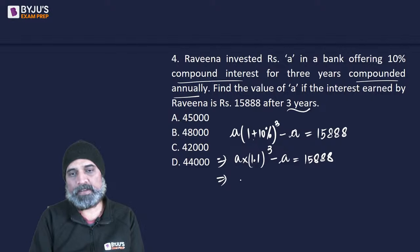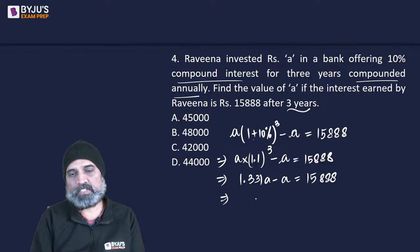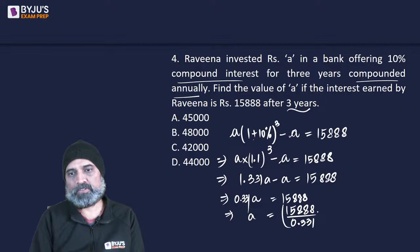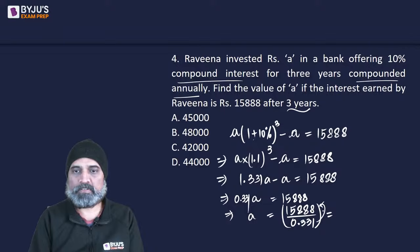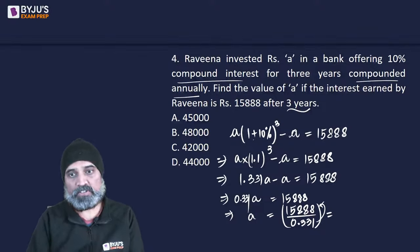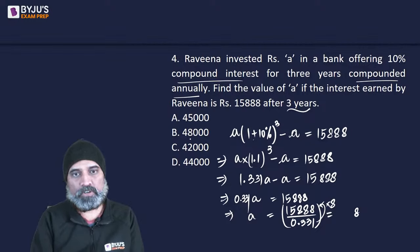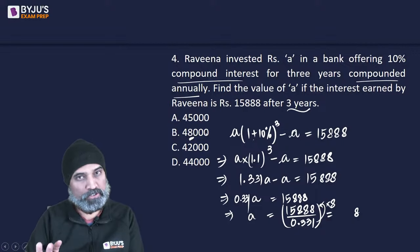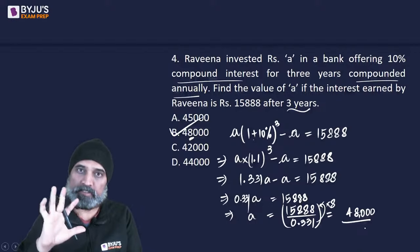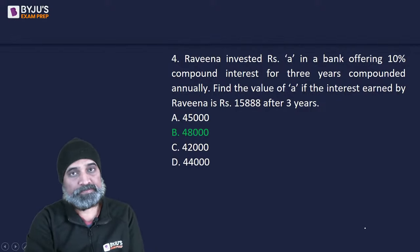This gives 0.331A = 15,888, so A = 15,888 / 0.331. To save time, we look at what digit times 1 gives an 8 as the rightmost non-zero digit — that's 8. The only option with 8 as the rightmost non-zero digit is option B: 48,000. So A = 48,000 rupees.